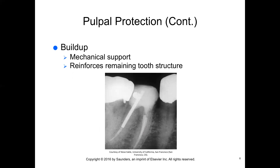A buildup, much like a high-strength base or liner, provides mechanical support for a restorative material when an excessive amount of tooth structure is removed or missing. Placing a buildup reinforces the compromised tooth structure and gives support and a foundation before a crown preparation. Resin-modified glass ionomer and resin cement are the strongest of these cements. This figure shows a radiograph of a cement buildup over a root-canal-treated tooth number 30 to reinforce the remains of the tooth preparation for crown placement. If you don't have enough tooth structure for a crown to adhere to, the crown won't last as long — that's why we do the buildup.